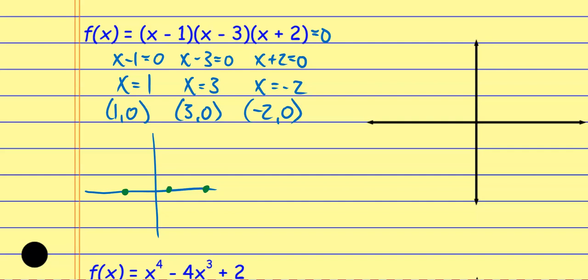I also know about the path of this function by looking at the end behavior. I only want the first term multiplied out, so it's just x times x times x, which is x cubed — a positive leading coefficient. With an odd degree and a positive leading coefficient, this end goes down and this end goes up. Because each binomial only occurs once, the multiplicity is odd, so the path crosses through at each intercept.